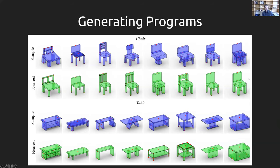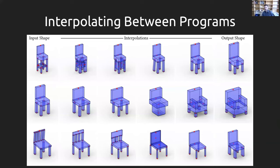It wouldn't be a generative modeling paper without interpolations. There are interesting things: going from a straight-backed chair to an armchair interpolates through a point with a pedestal base. My favorite example is a slatted-back chair that interpolates from five slats down to four slats, then three slats, and finally into a solid back — which is kind of cool.